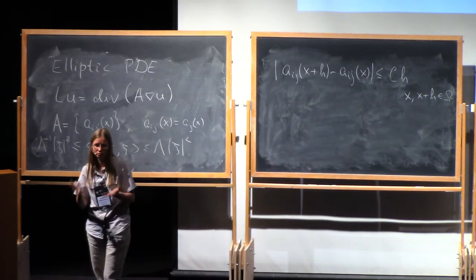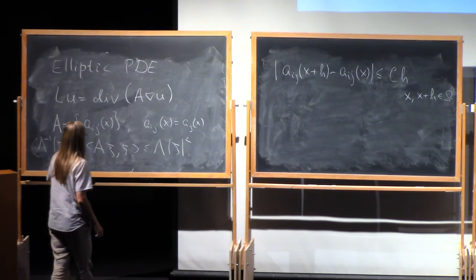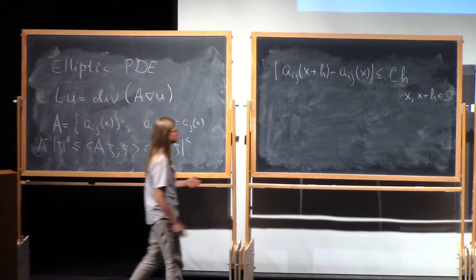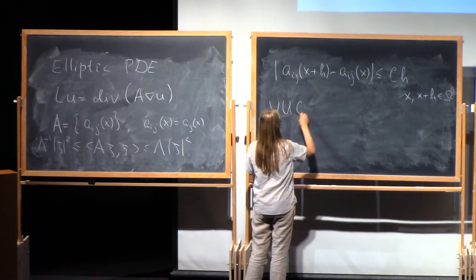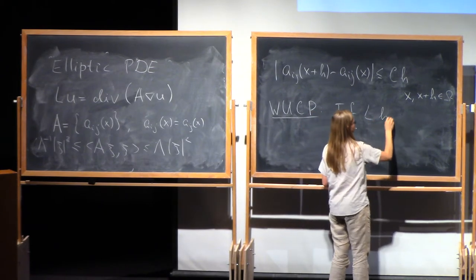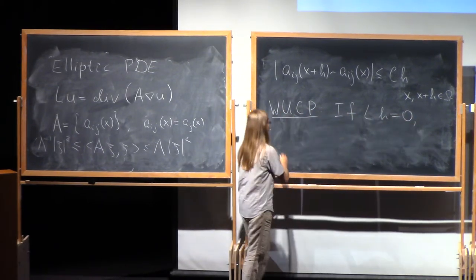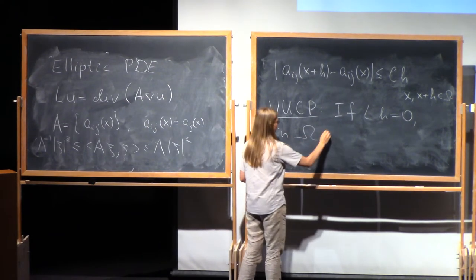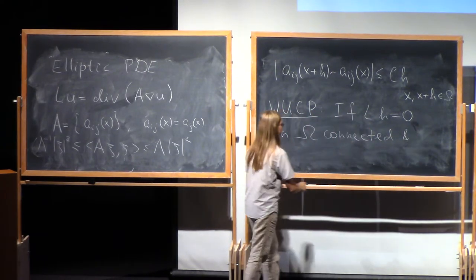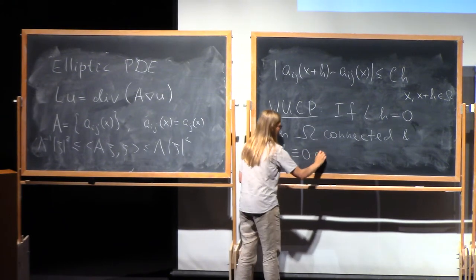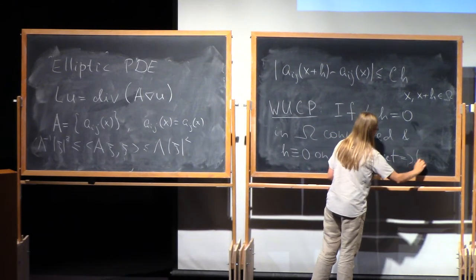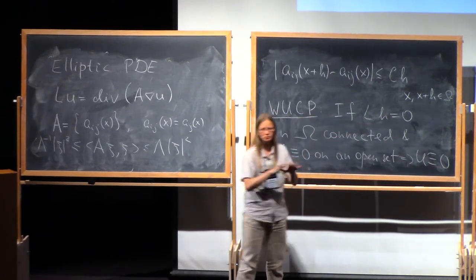It's well known that for such elliptic operators, we have weak unique continuation property. If you have a solution in a connected domain, and this solution is zero on an open set, then it's zero in the whole domain.